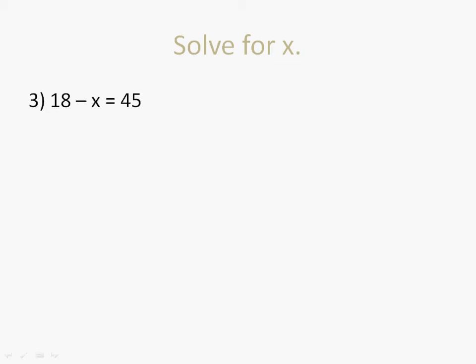Since I have a negative 1 x over here, what I could do is zero this out by adding x to both sides. So that's 18, negative x and positive x, that's just zero. Then 45 plus x, remember those are not like terms so I gotta keep them separated so that's just 45 plus x.